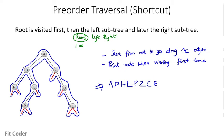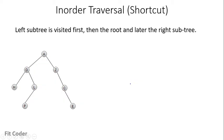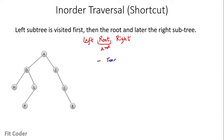Now let's see the in-order traversal. In in-order traversal, we first visit the left subtree, then we visit the root, and at the last we visit the right subtree. So the root is visited second. Here also, we travel along the edges and print when the node is visited for the second time.